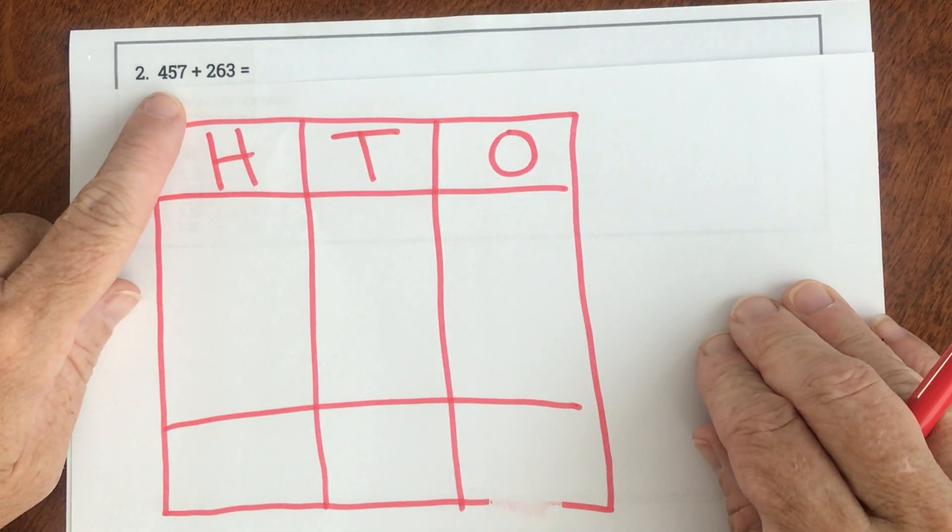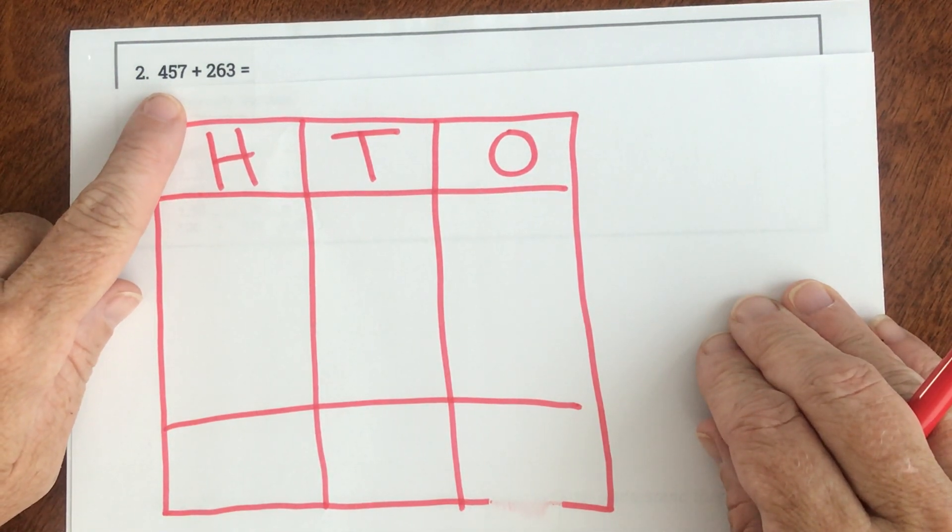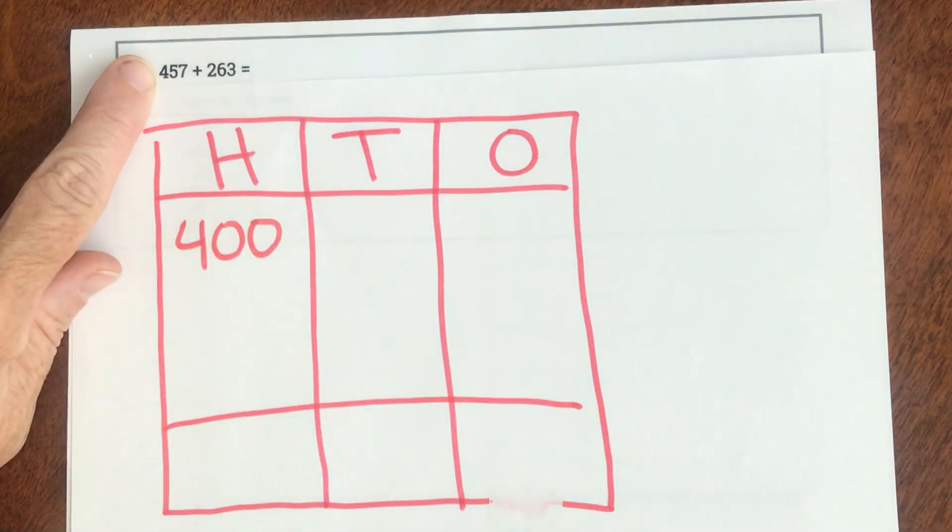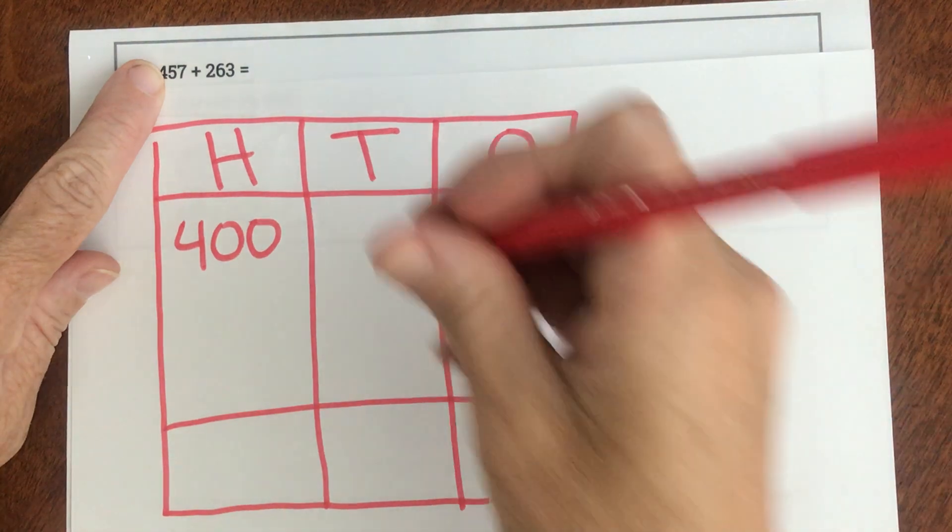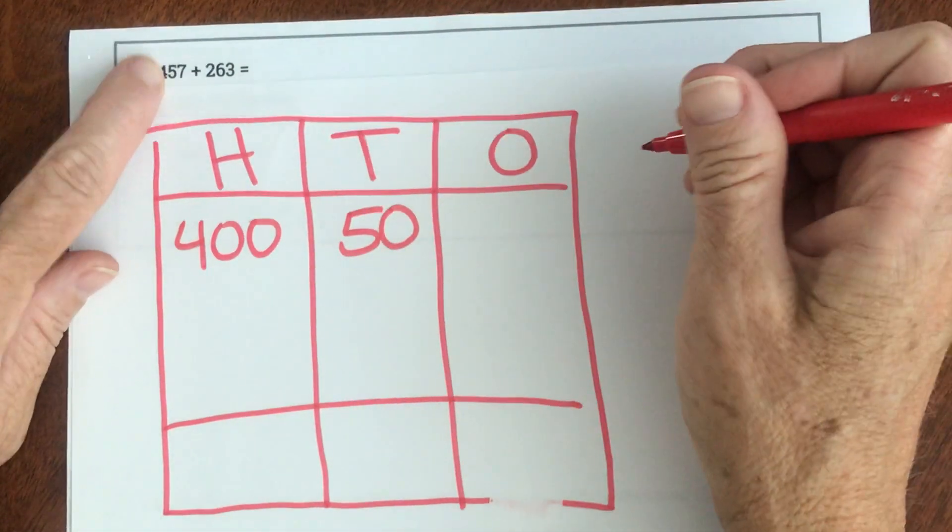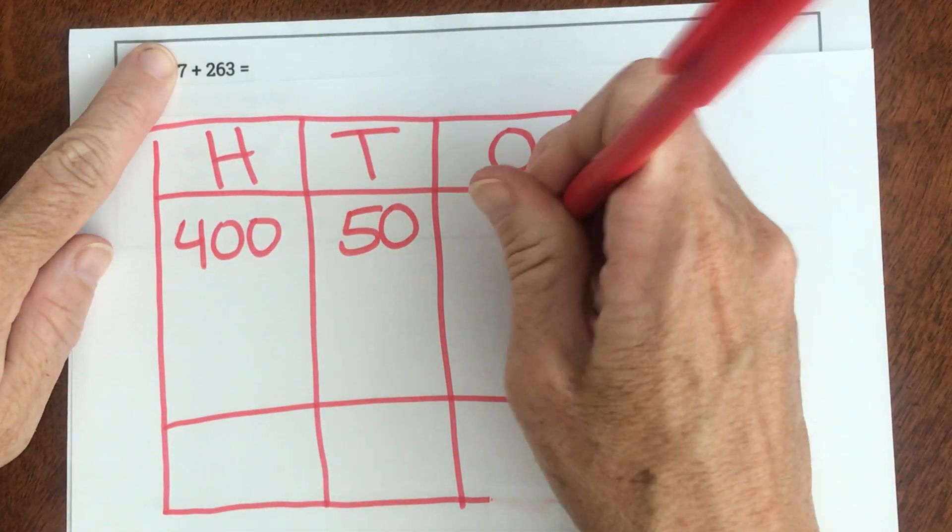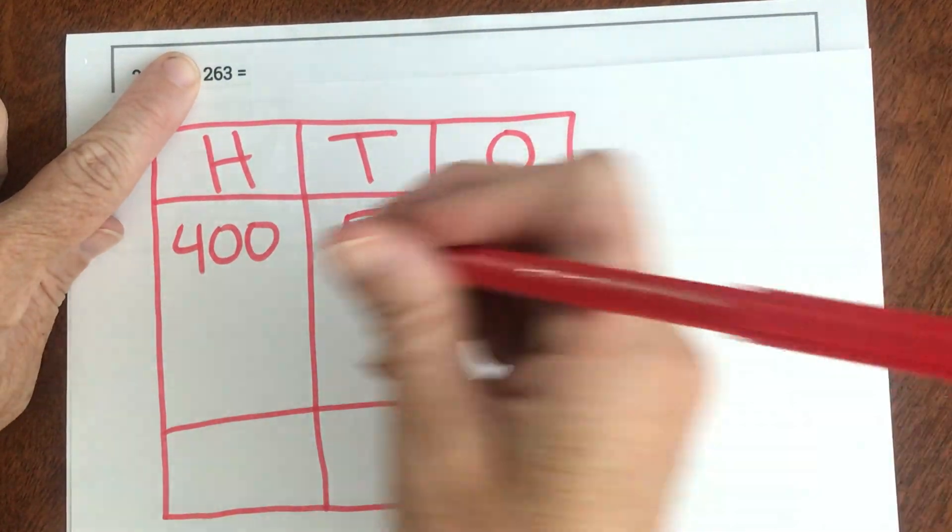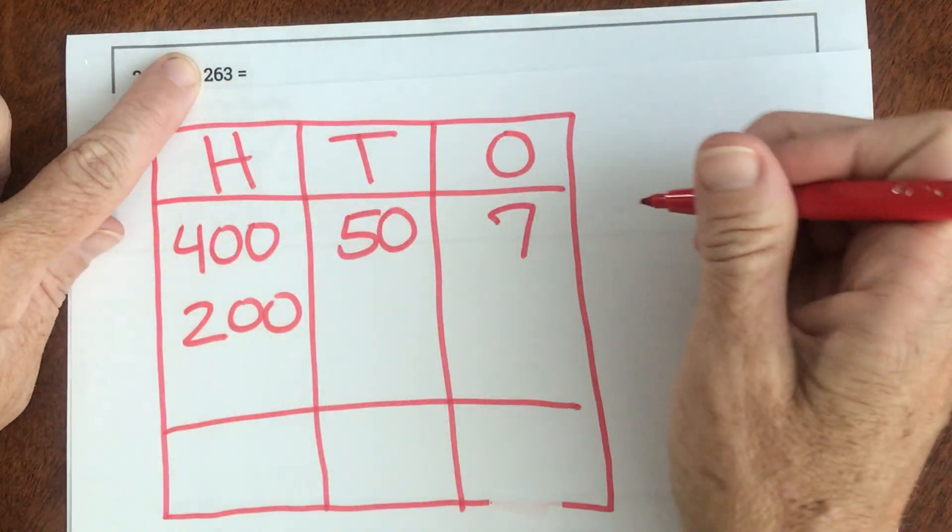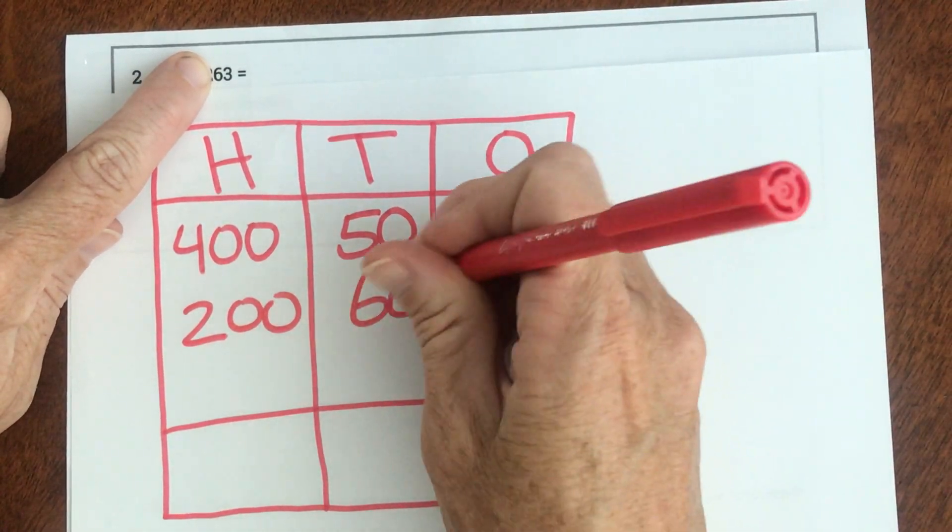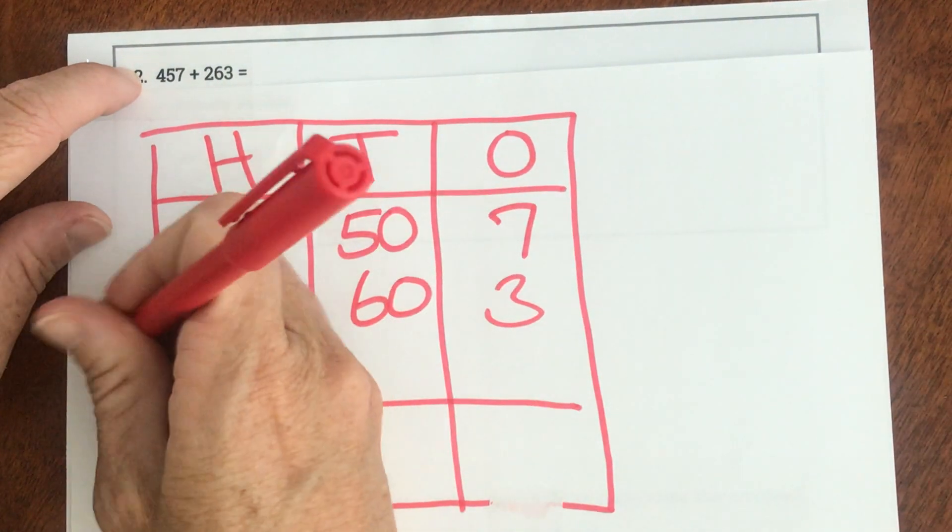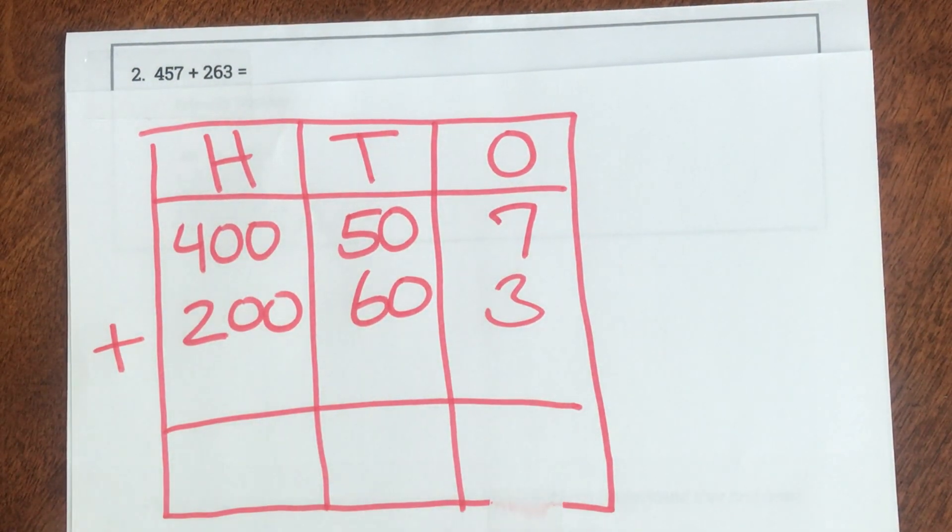So if my number is 457, my first addend, when I decompose it, there's a four in the hundred spot, so that means that's 400. There's a five in the ten spot, so that means 50. And there's a seven in the one spot. Now let's decompose this addend. There's a two in the hundred spot, so it's 200. Six in the ten spot, which is 60, and a three in the one spot. And we are adding. So that was step one, which is the long step.